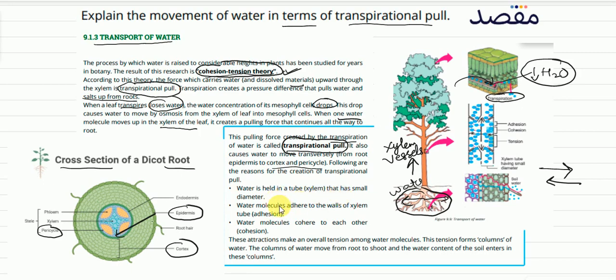What is adhesion? When water molecules attach to the xylem wall, that is adhesion. When water molecules attach to each other, that is cohesion. Wall attachment is adhesion, and molecule-to-molecule attachment is cohesion. These adhesion and cohesion forces allow water to move easily upward. These are the reasons why transpiration pull works so effectively.